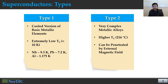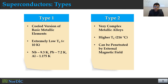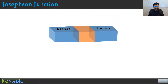The highest recorded critical temperature for Type 2 superconductors is 216 degrees Celsius. Another difference between Type 1 and Type 2 superconductors is that Type 1 superconductors can be penetrated by an external magnetic field.